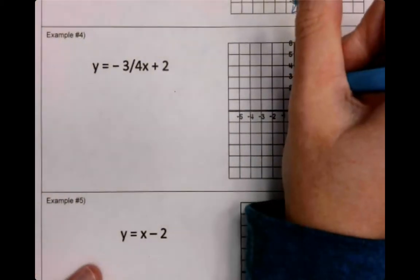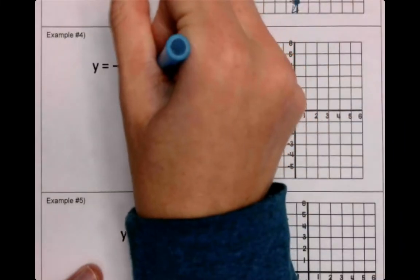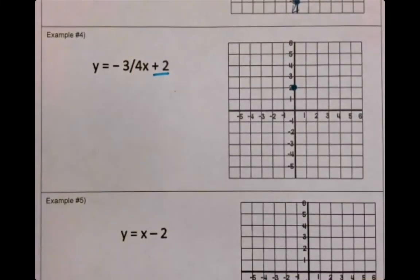Welcome back. We should have had our point at positive 2 for our B. If you did not get that, erase your graph. Try it again. If you did get that, then let's keep going.